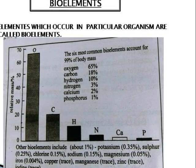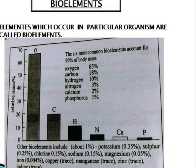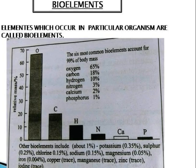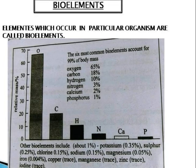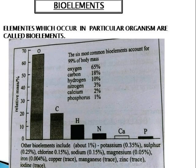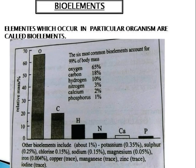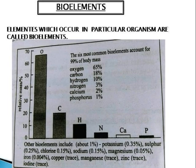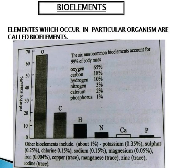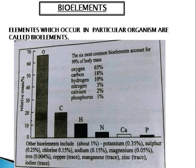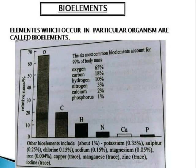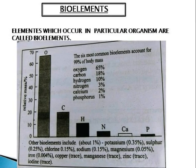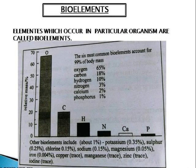Minor bioelements are required in smaller amounts, making up about 1% collectively. In the human body, 6 bioelements make up 95% of the total mass — these are the major elements: oxygen 65%, carbon 18%, hydrogen 10%, nitrogen 3%, calcium 2%, and phosphorus 1%. The remaining bioelements, about 1%, are called minor and trace elements.